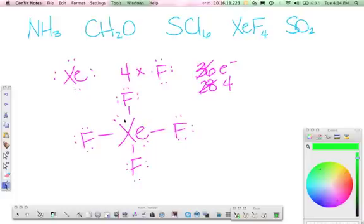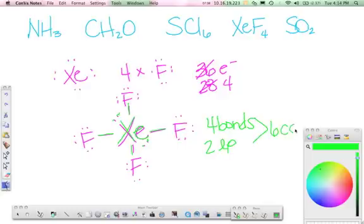Looking at our central atom, xenon of course being that atom, we have four bonds and two lone pairs. That gives us a grand total of six charge clouds. We go to our table, six charge clouds, go across to where it has two lone pairs, and our shape is square planar.